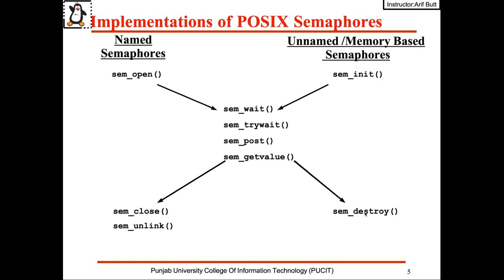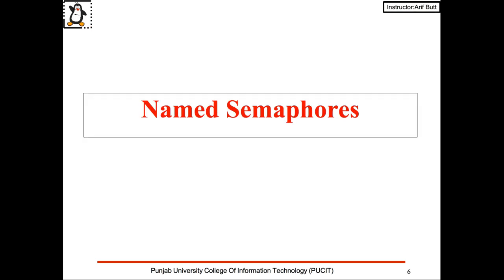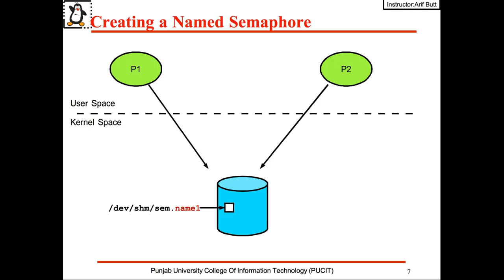Let us study these two types one by one, starting with named semaphores. Named semaphores are created as files inside the /dev/shm sub-directory. For example, a semaphore with the name /name1 once created will have a file named sem.name1 — whatever name you gave to that semaphore.